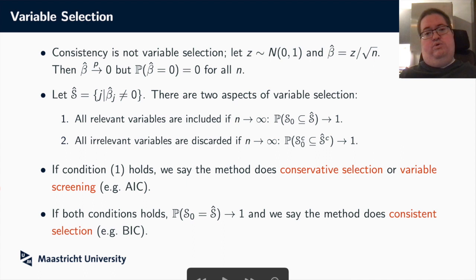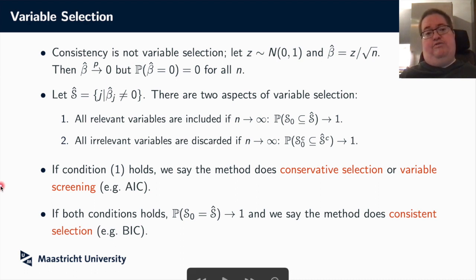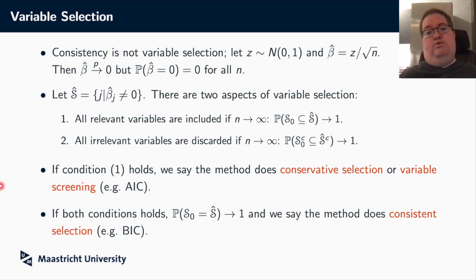Now let's look at what we can say about actual variable selection. One of the reasons why we use the lasso rather than, for instance, ridge regression, is that it actually sets coefficients equal to zero. And so it's important to realize the distinction between consistency and variable selection. We might think, well, if our true parameter is equal to zero, then consistency means that we also estimate it as zero.